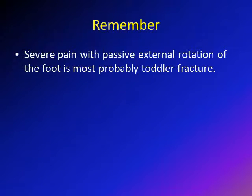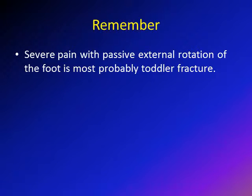One thing that helps differentiate toddler fracture from other causes of acute limping with a negative X-ray is to examine the child with passive external rotation of the foot. You can hold the foot and say you'd like to see their shoes, and passively externally rotate the foot. If there is severe pain with passive external rotation, this is most probably toddler fracture.